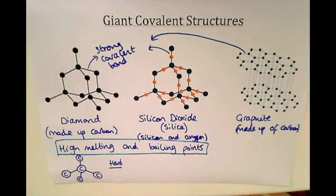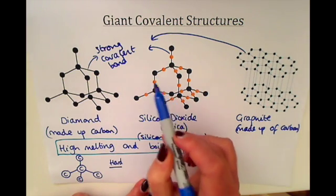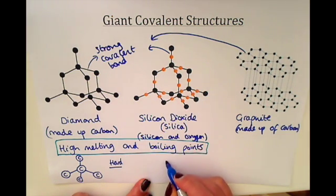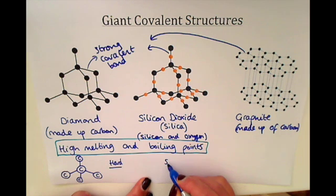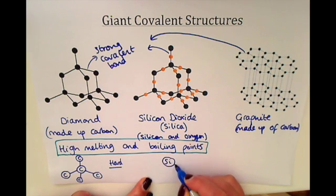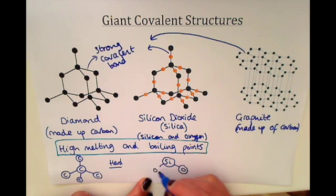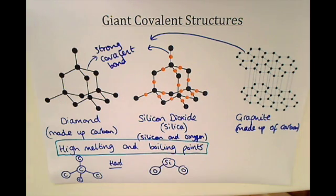Silicon dioxide has a structure where the basic unit is a silicon atom bonded to two oxygen atoms.